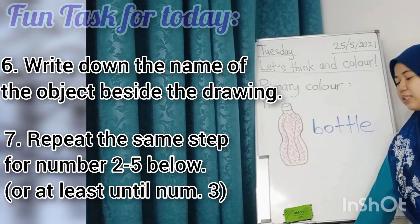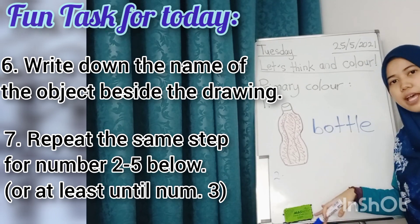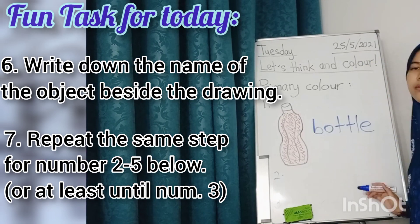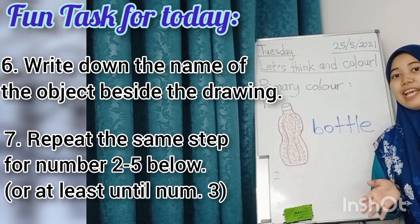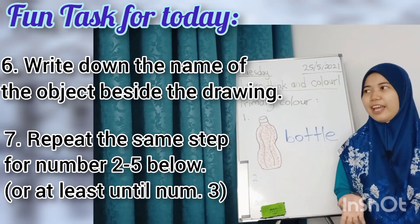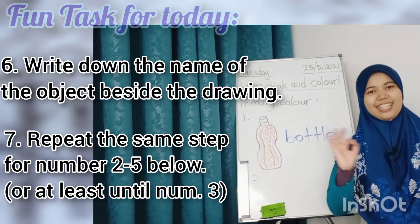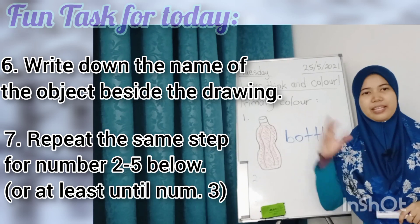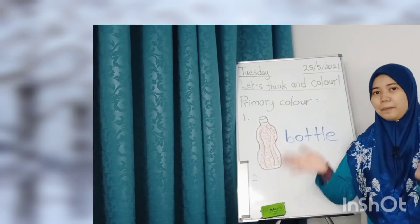The next drawing goes below — go up to number five, or at least number three. Write down number two, draw your object in a primary color, and write the name. Then number three, the object again and its name. For example, the first one is red, the next one is a yellow object, then maybe in your bedroom you find a blue object. At least three things in three different primary colors. Remember, only primary colors.